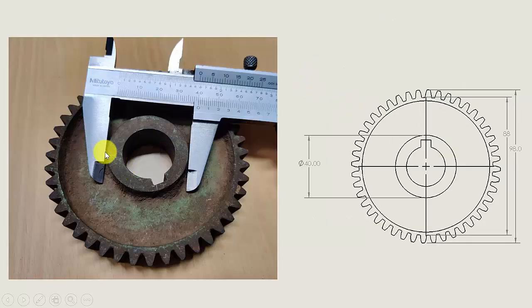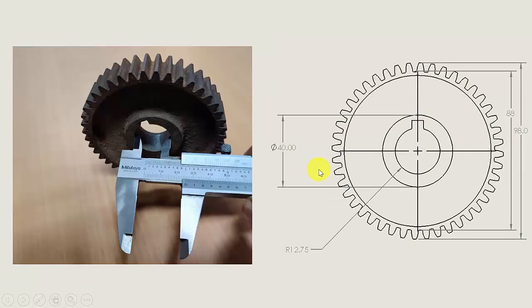Then the diameter of this section is 40 mm, so I have marked it. Next I have measured the inner diameter of the gear — the inner diameter is 25.5 mm. So the radius is 12.75 mm and I have marked it in the rough drawing.